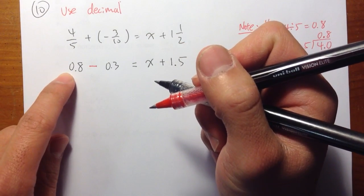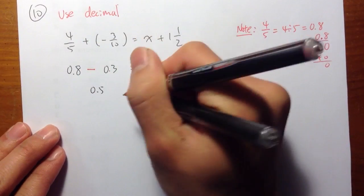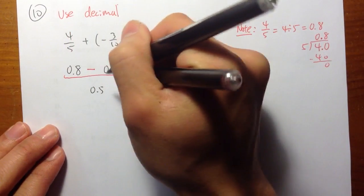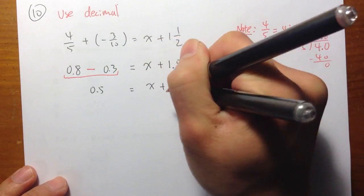For this, 0.8 minus 0.3, we get 0.5. So this together becomes 0.5, and that's equal to x plus 1.5.